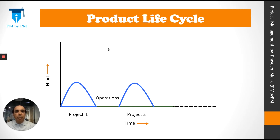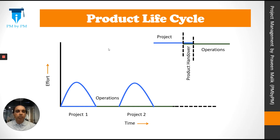In the case of a car, project 1 would produce the first model, it will be operationalized, and then after maybe 3 or 4 years another model will be introduced and operations will take over, going on until the car is retired. Projects are represented by a blue line and operations by a green line. At the end of a project the product is ready, but operations are not yet ready to take it over, so the project team hands over the product, operations take the knowledge base, understand the product, and start their work. There is a small overlap between projects and operations each time a new project is introduced and the product is upgraded.